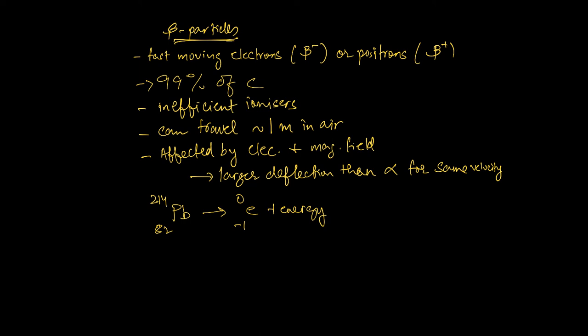Taking lead-214 as an example of beta decay: lead is the parent nucleus and it emits a beta particle — an electron written with zero mass and a charge of minus one. To balance the equation, the daughter nucleus must have proton number 83 and nucleon number 214, since 83 minus 1 equals 82 and 214 plus 0 equals 214. As it turns out, the element with proton number 83 is bismuth. So the proton number has increased by one in the daughter nuclide compared to the parent.